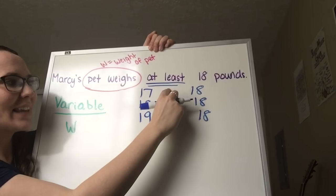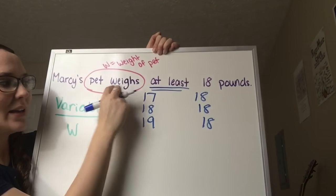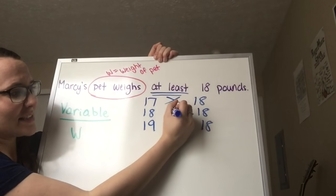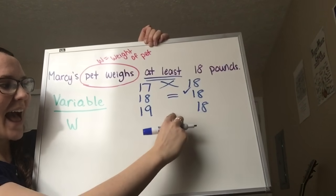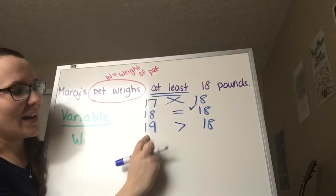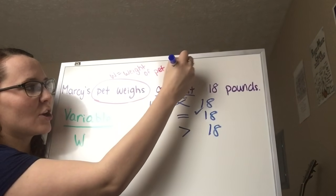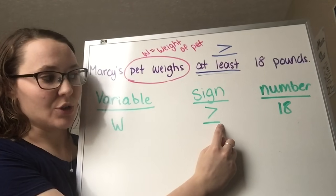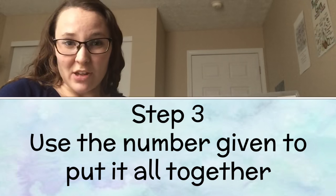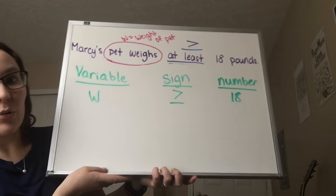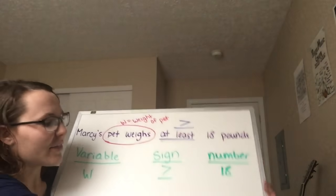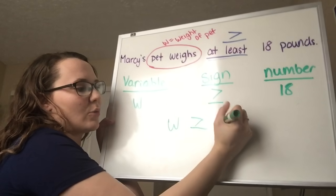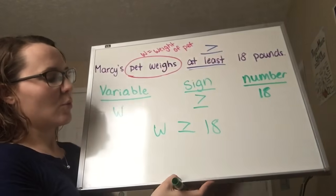Is 17 at least 18 pounds? If I put 17 in for Marcy's pet's weight, is 17 at least 18? No. Is 18 at least 18? Yes, that one works. And is 19 pounds at least 18 pounds? Yes. So since greater than and equal to work, we're going to replace the word "at least" with greater than or equal to — that's how we pick our sign. So our final answer is W is greater than or equal to 18, which means Marcy's pet weighs at least 18 pounds.